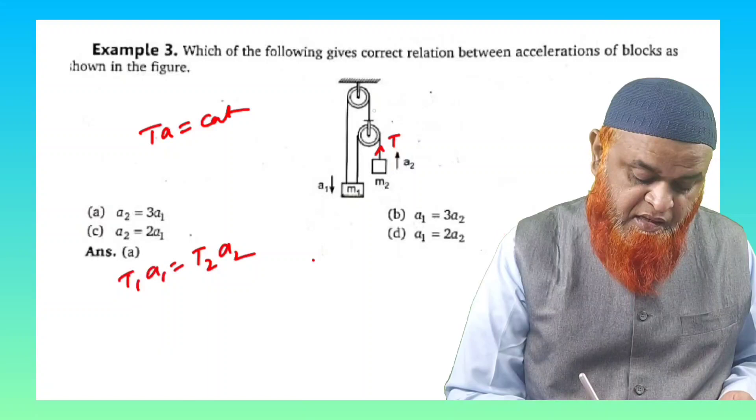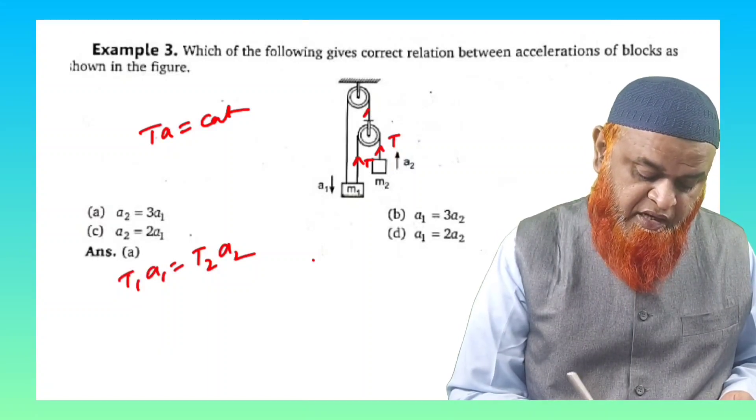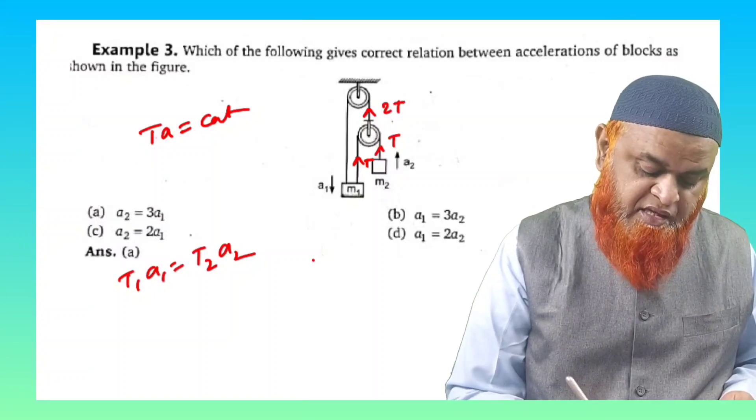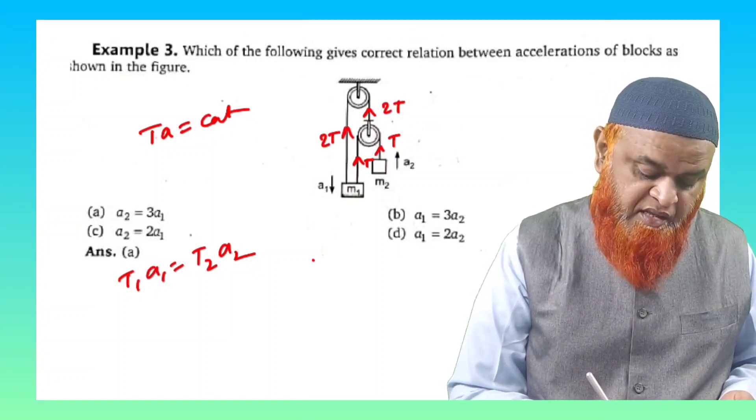So this is also tension T. That means on this string tension is 2T, and the same tension will come here in the left side, that is 2T.